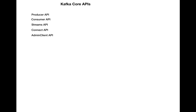The streams API allows the application to do some transformation of the data and stream it from one topic to another topic. The connect API can be used to connect to different external systems, pull the data and push it to Kafka, or send data from Kafka to an external system. The admin client API handles admin activities — you can inspect the broker, ZooKeeper, and other objects. These are the five core APIs.